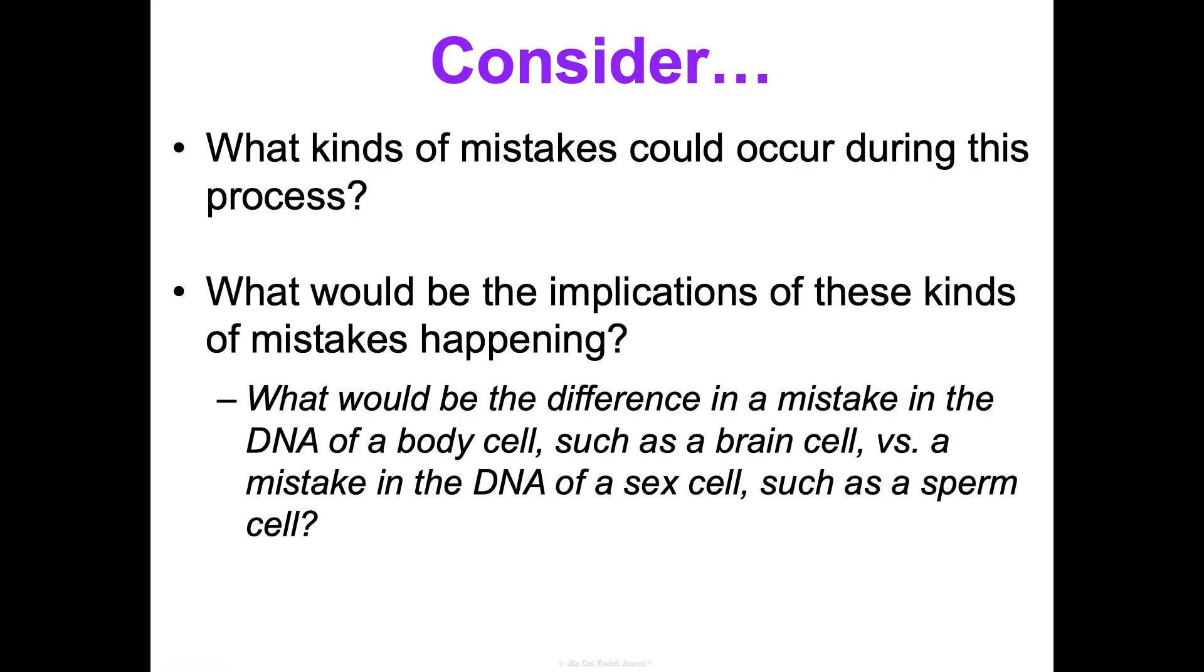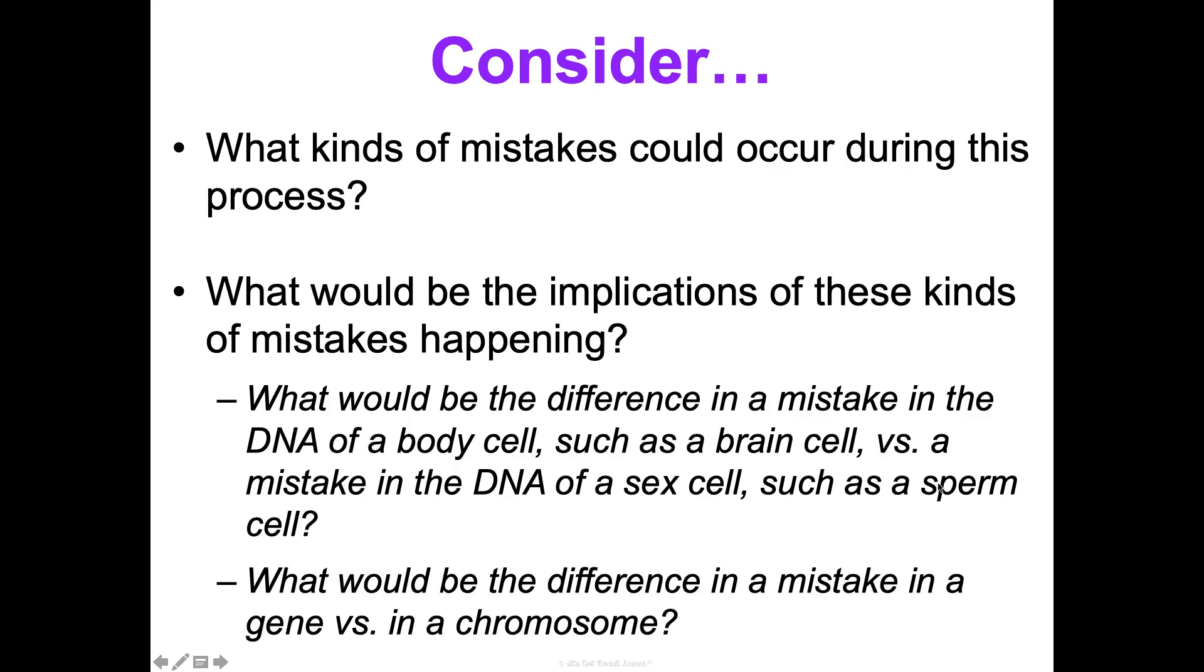Consider: what would be the difference if this happened to the DNA of a body cell like a brain cell, or if a mistake happened in the DNA replication process in a sex cell being made like a sperm cell? That's super important to consider and we'll talk about it as a class. And what would be different if it happened in just one gene versus an entire chromosome? That's something I want you to think about too, and then we'll discuss them. That's your very basic overview of DNA structure and replication.